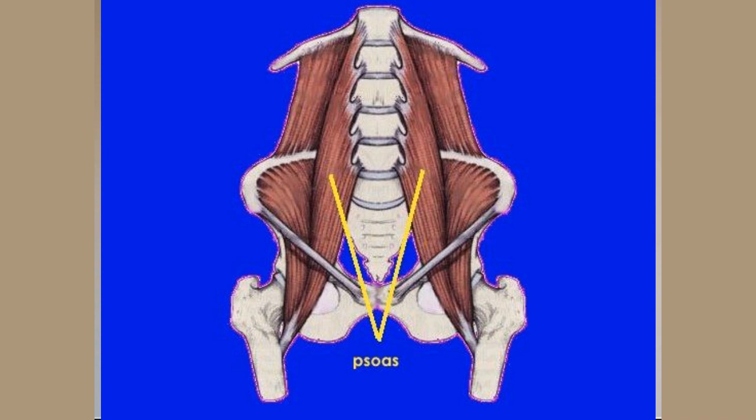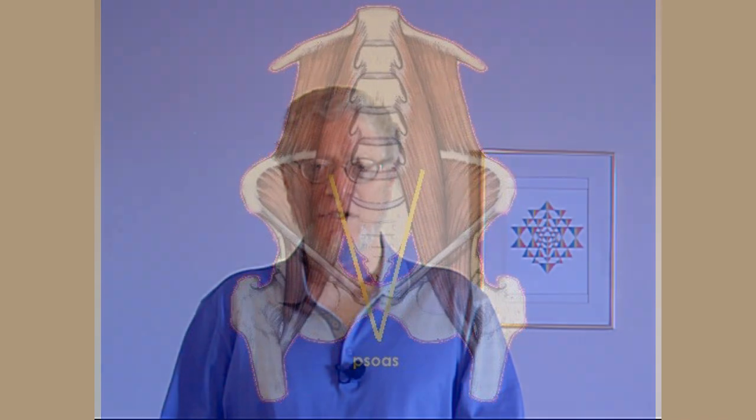First, groin pain. The iliopsoas muscle starts at the level roughly of the diaphragm and goes deep to the organs through the pelvis, and surfaces at the bottom where the ridge of the pelvis is — where it meets the leg. The tendon of the psoas muscle goes over that ridge and goes back and inserts on the inner surface of the groin. When the psoas muscles are tight, they pull upon that tendon, and that tendon in turn pulls upon and presses against the bursa over which the tendon passes on its way to the inner groin.